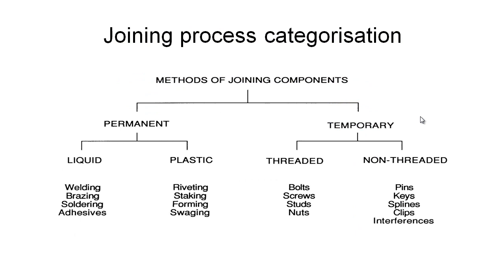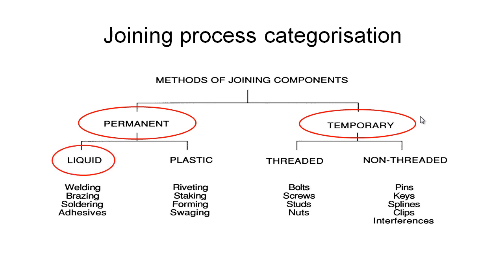This is a way of categorizing the different joining methods available to us. We can split them all up between permanent methods — or relatively permanent methods, as many of these can be undone with effort but not easily — and temporary methods. Underneath the permanent methods, I've divided them into those joined using liquids, which includes welding, brazing, soldering, and adhesives, and a plastic joining method — not talking about plastics, but plastic deformation of materials, so things like riveting, staking, forming, and swaging.